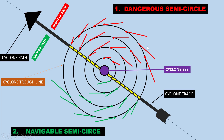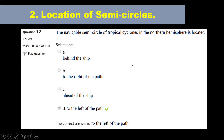Let's start with one of the questions. The navigable semicircle of tropical cyclones in the northern hemisphere is located — so what you need to know is the movement of the tropical cyclone in the northern hemisphere and in the southern hemisphere.